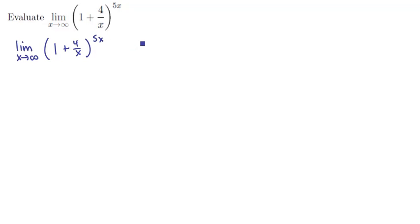As we let x tend to infinity, this becomes 1 plus 4 over infinity raised to the 5 times infinity power. This expression is 0, so we have 1 raised to an infinite power and that's type C indeterminate, which means we need to rewrite the limit as an exponential.